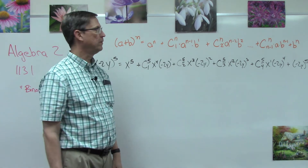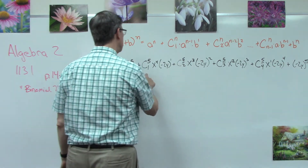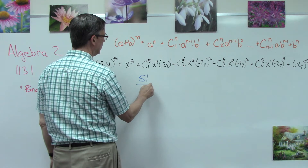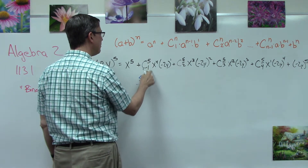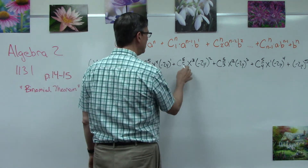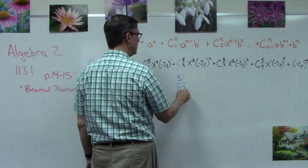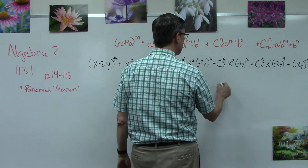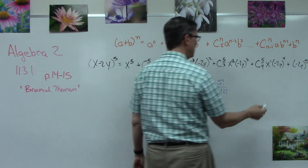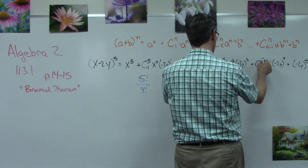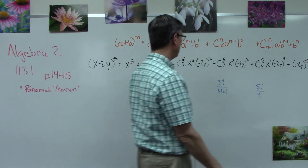Now the last part is applying the combination rule to figure out the coefficient. We take 5 factorial and divide by r factorial times (n minus r) factorial. So the first coefficient is 5 factorial over 1 factorial times 4 factorial. The next is 5 factorial over 2 factorial times 3 factorial. Then 5 factorial over 3 factorial times 2 factorial. Then 5 factorial over 4 factorial times 1 factorial. We don't need one for the last term.